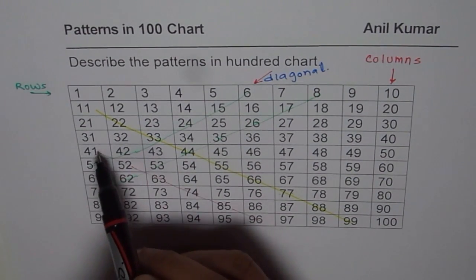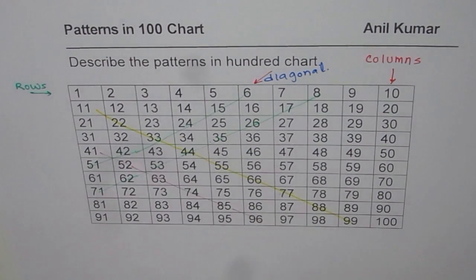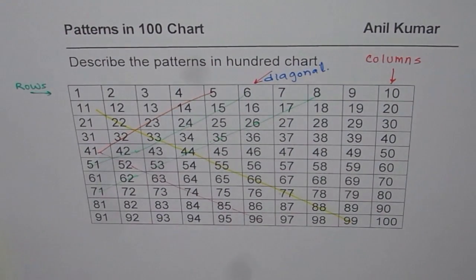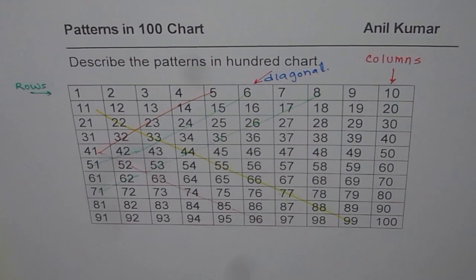If you move right and up, then the sum of digits remains the same, just as we saw moving left and down. So these are some of the patterns you see in a 100 chart. I'd like you to go through this video once again and write down all the patterns, describing them using the words: rows, columns, diagonals, sum of digits, increasing by, decreasing by. I hope that helps. I am Anil Kumar. You can subscribe to my videos and learn a lot. Thank you and all the best.